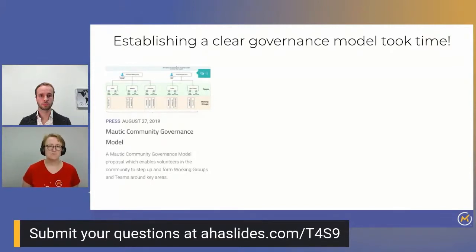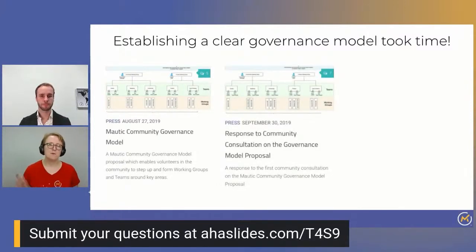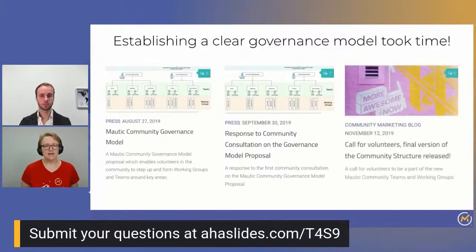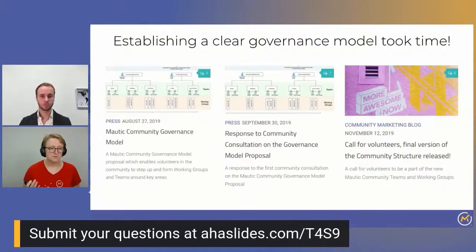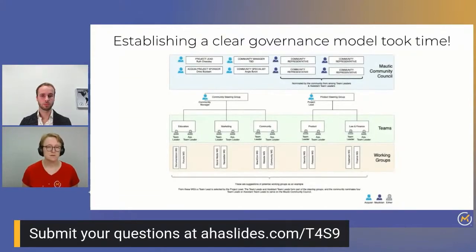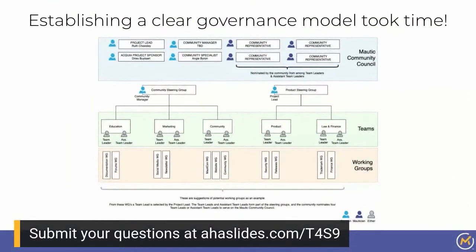It is not for the faint of heart — there was so much work involved. We researched governance models from lots of different open source projects and drew on our knowledge of what worked and what didn't. We first shared the proposal in August 2019 for community consultation for two weeks, took the feedback on board, went back to the community with clarifications, and finally in November we got to a version that everybody was happy with. We put out a call for team members on the 7th of November with our first meeting on the 29th.